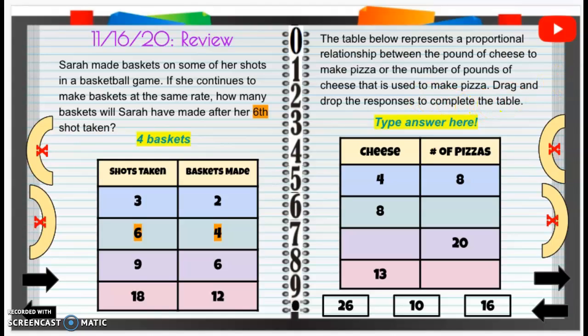So when we look at this, we're going to complete this table. So we have cheese and number of pizzas. So for cheese, we have four pounds of cheese which makes eight pizzas. So four pounds of cheese makes eight pizzas.